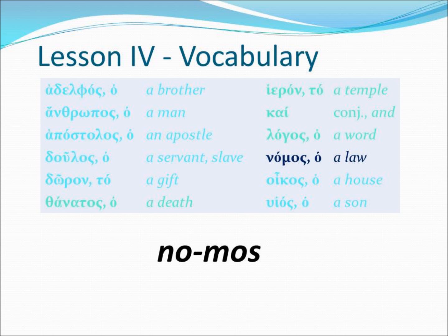Our next word is nomos, translated to mean 'a law.' The masculine article tied with this word shows it's a masculine noun. So nomos means 'a law,' and ho nomos would be 'the law.'